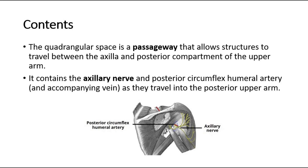The quadrangular space is a passageway that allows structures to travel between the axilla and the posterior compartment of the upper arm. It contains the axillary nerve and posterior circumflex humeral artery and accompanying vein as they travel into the posterior upper arm.